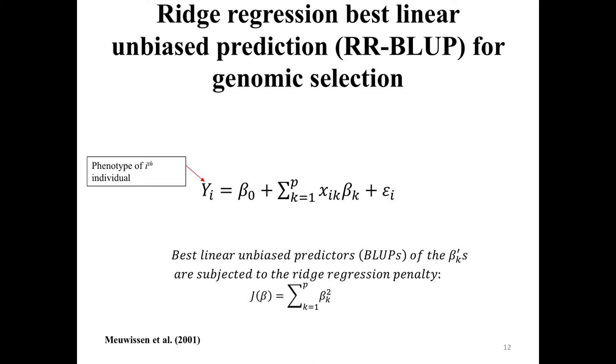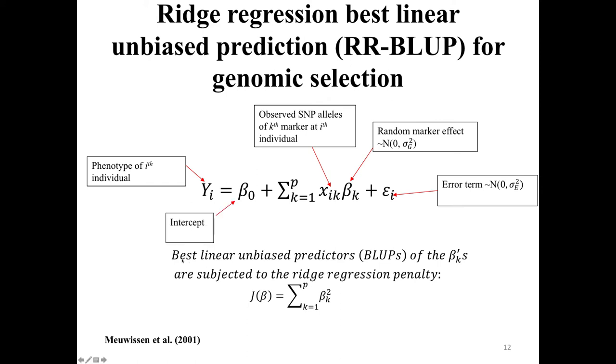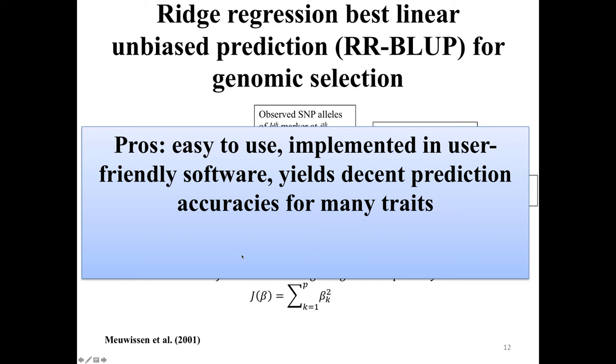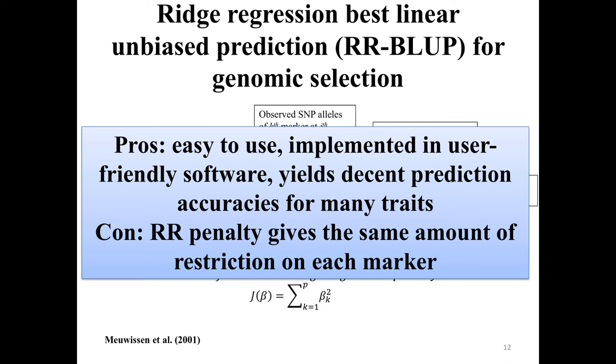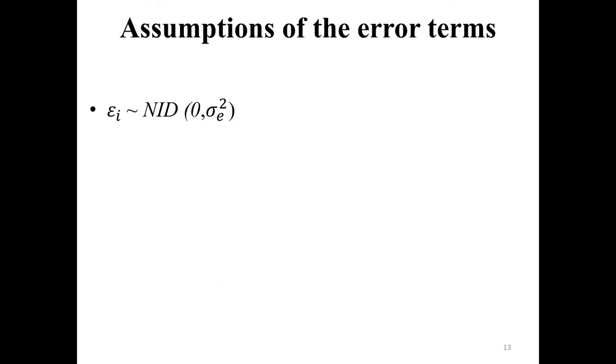Here's a description of the ridge regression best linear unbiased prediction or RRBLUP model for genomic selection. Arguably, this is the most widely used model in genomic selection. What we have is that our Y variable is phenotype of interest. Then, each of our markers are included as random effects. We have our error term and our intercept. The BLUPs, the predictions of these random marker effects are subject to this ridge regression penalty. A pro of RRBLUP is that it's easy to use. It has been implemented in user-friendly software, such as what I'm going to look at in the next video series, and it yields decent prediction accuracies. A con, a disadvantage, is that whether or not your marker is tagging a large effect or small effect gene, your ridge regression penalty is getting the same amount of restriction. Perhaps for some very specific traits that have extremely large effect genes, RRBLUP may not be optimal for that.